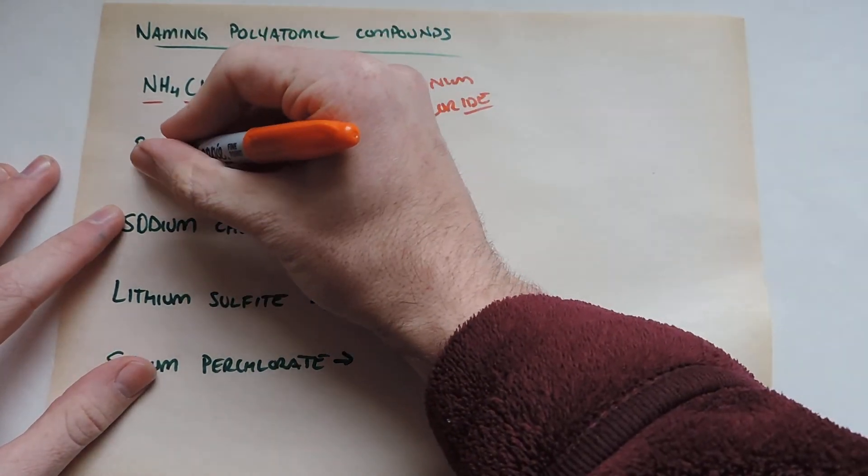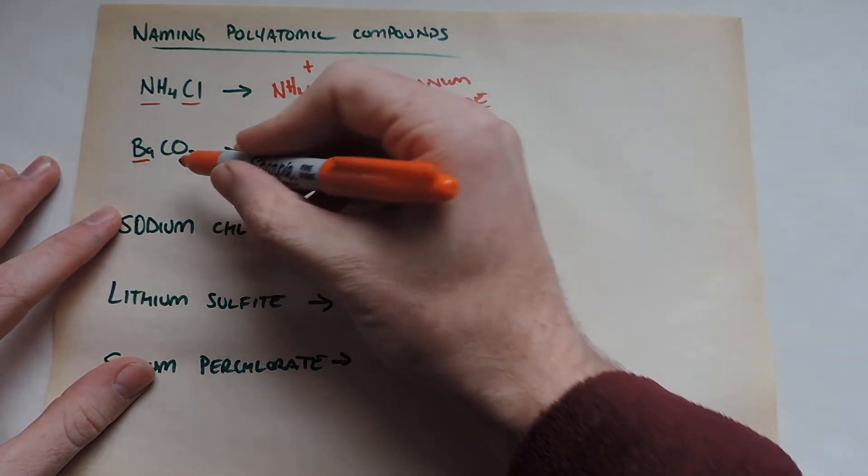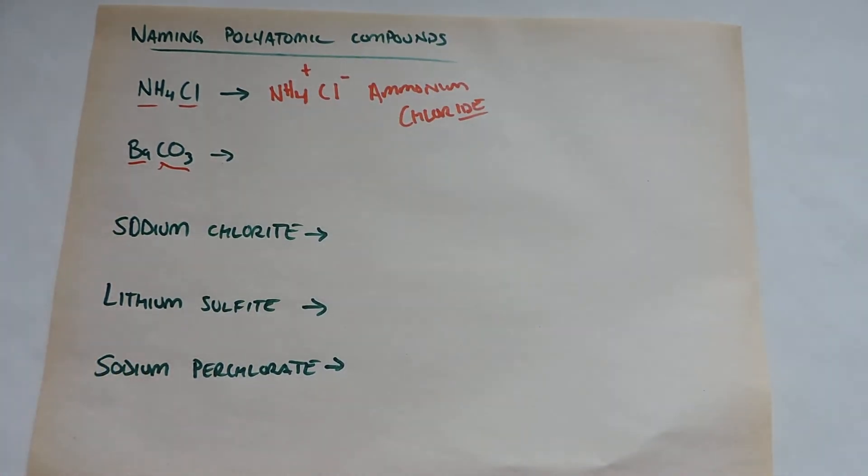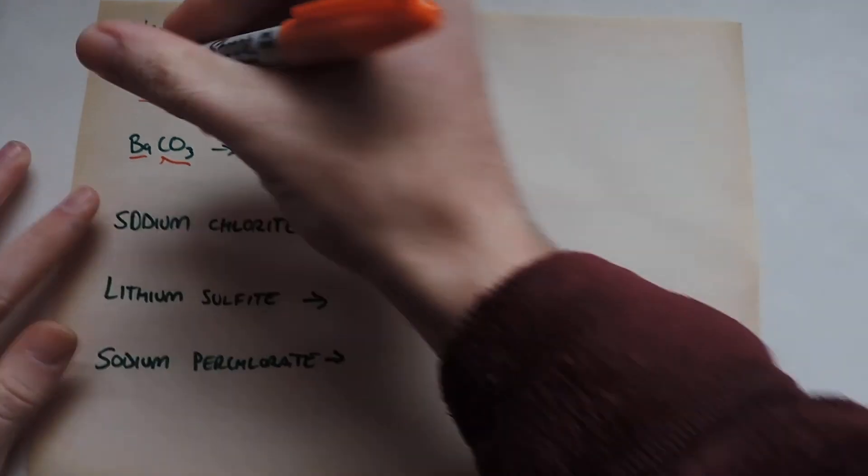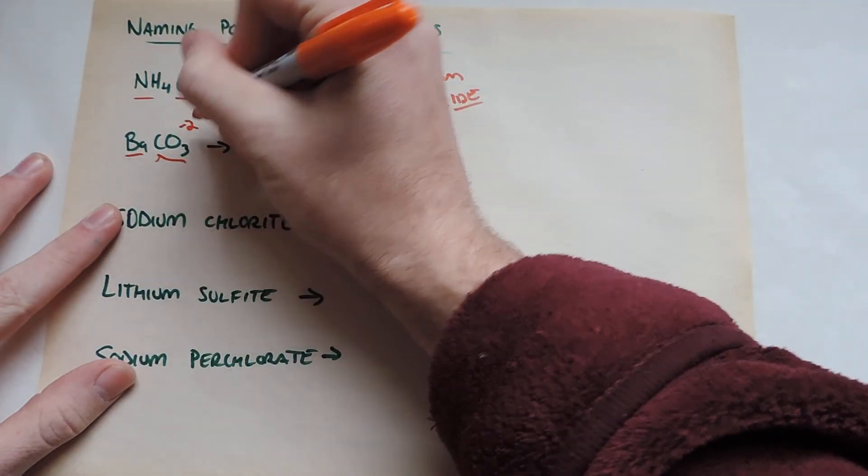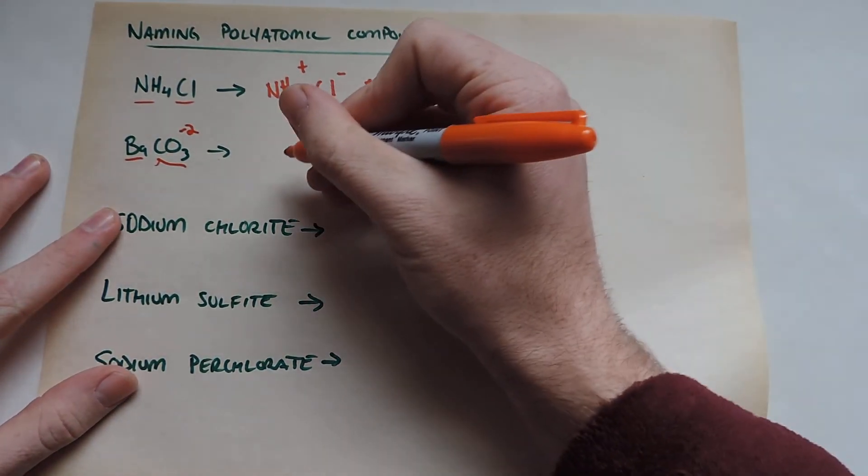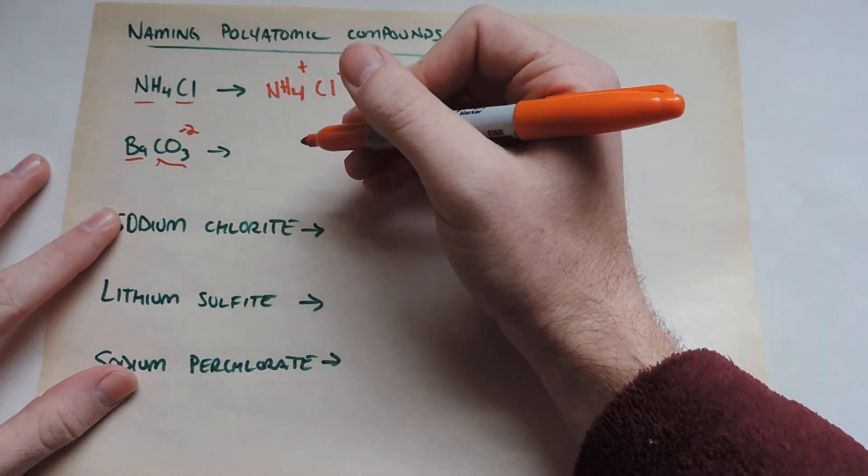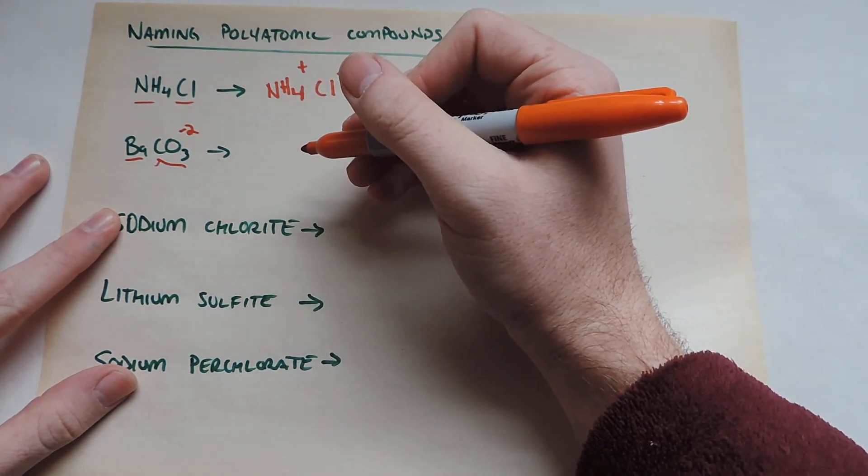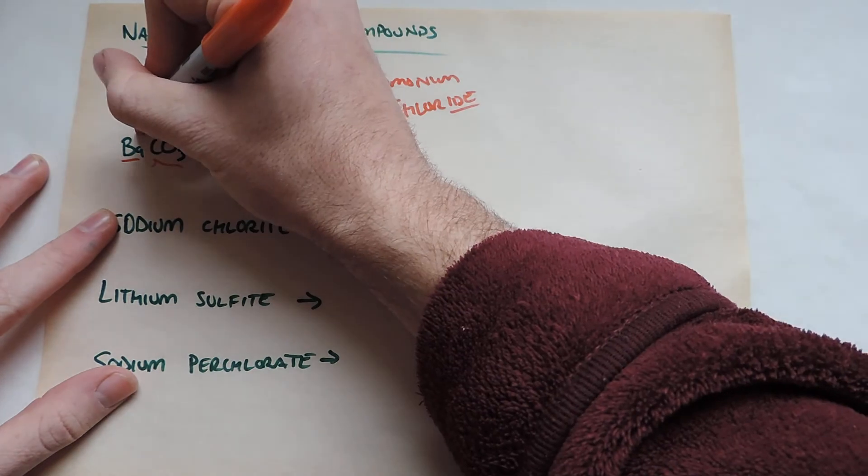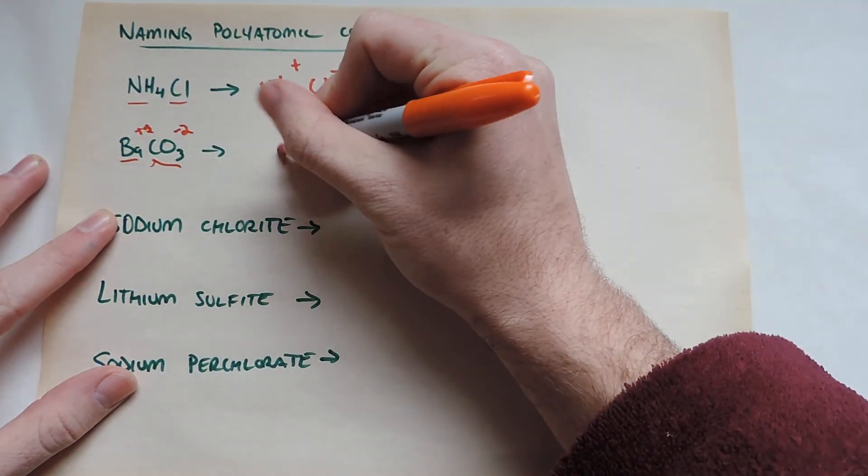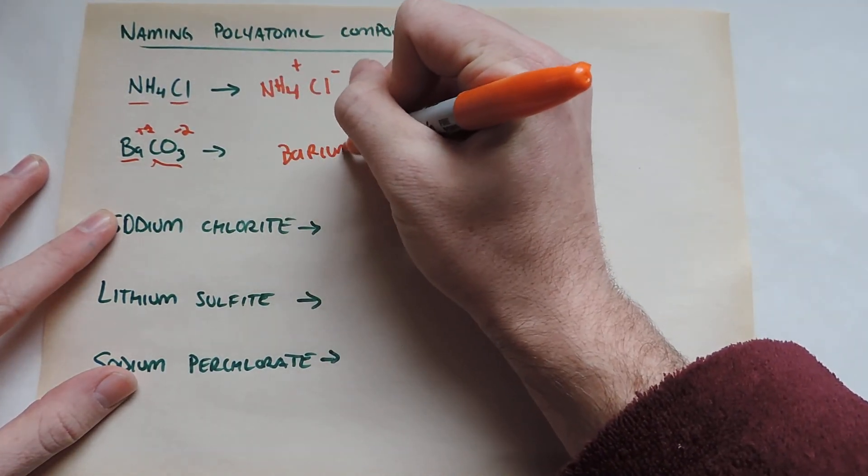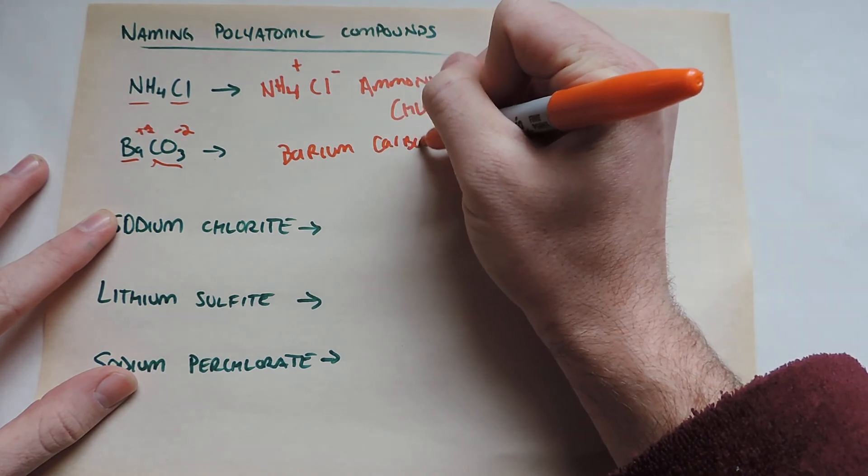Now for the second one, we know that's barium. There's nothing fishy about that. This bad boy, though, is carbonate. And so carbonate has a minus two charge. Okay, so barium, being the alkaline, yes, alkaline, is actually going to have a plus two. So we're all cool here. This looks good. Barium carbonate.